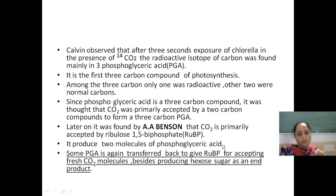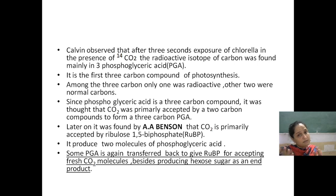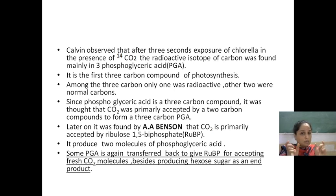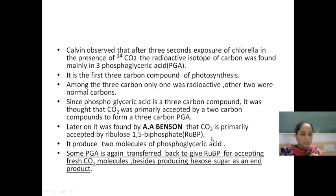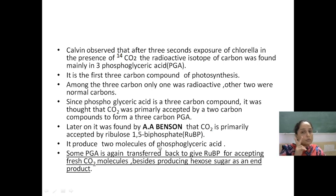The 5-carbon RUBP absorbed one CO2 molecule, forming a 6-carbon compound, which then divided into 2 parts — giving two 3-carbon compounds. So the first product, phosphoglyceric acid (PGA), is a 3-carbon compound, and 2 molecules are produced. So 6 carbons divided into 3 and 3, giving two 3-carbon molecules.